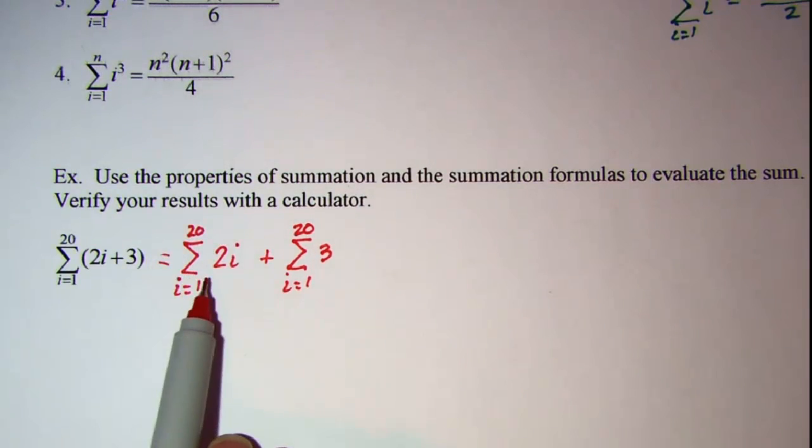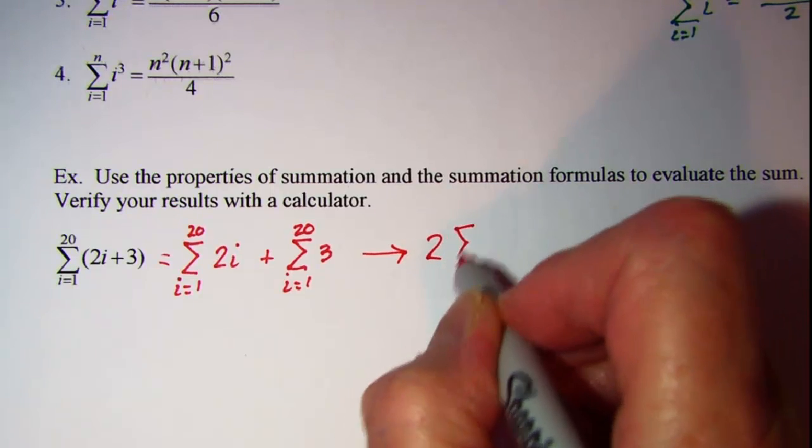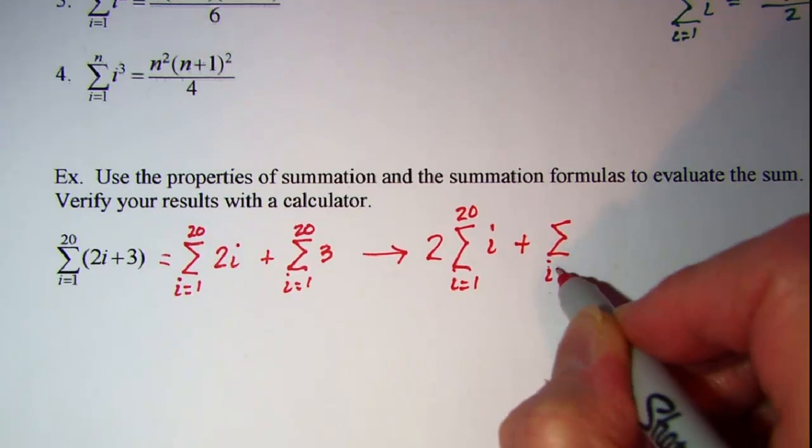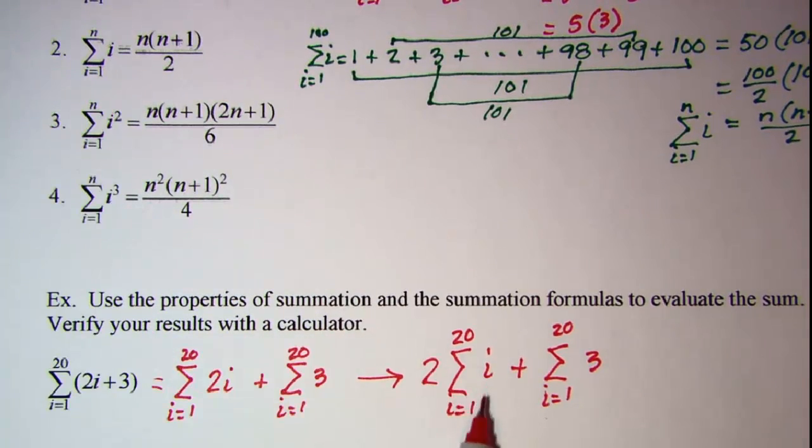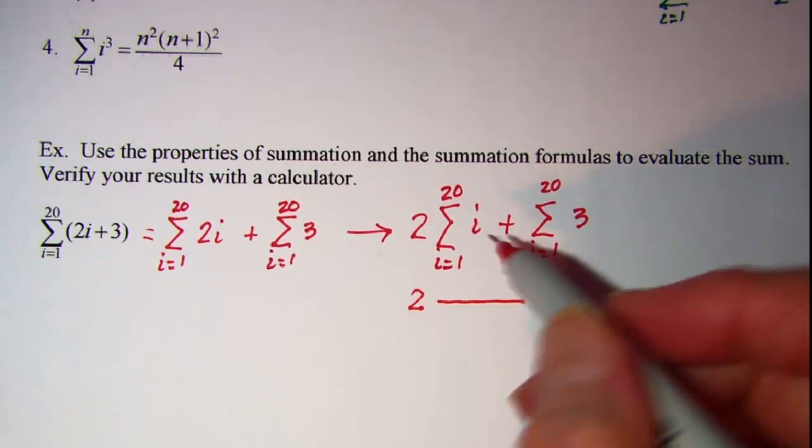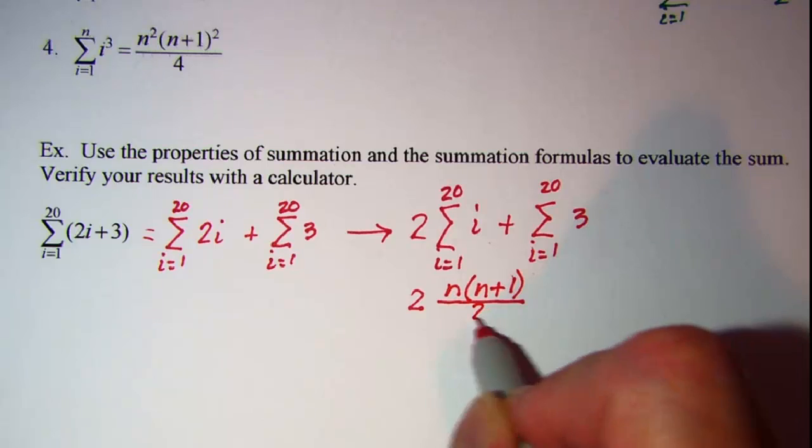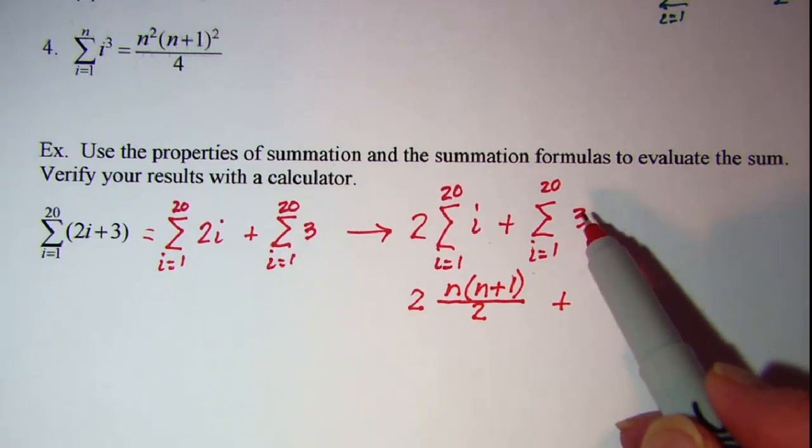Then from our first property we know that we can pull these two out in front. So this is the same as 2 times the summation as i goes from 1 to 20 of i plus the summation as i goes from 1 to 20 of 3. Now if we use our second formula to write this as an algebraic statement we have 2 times N times N plus 1 divided by 2 and then for our second one that's our constant so we know that that is 3 times 20.